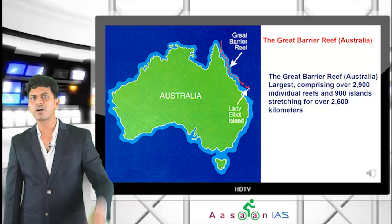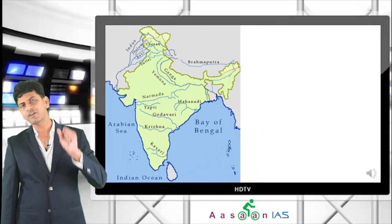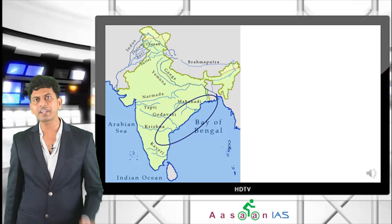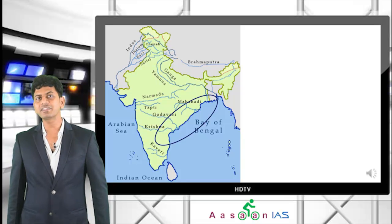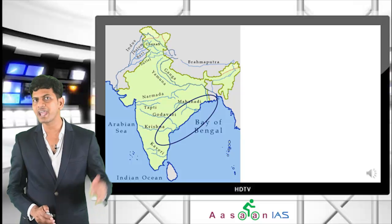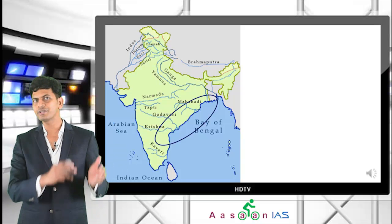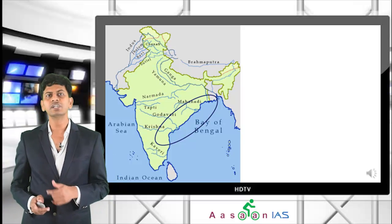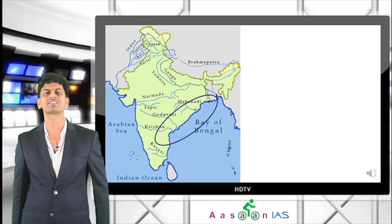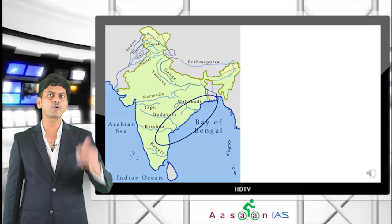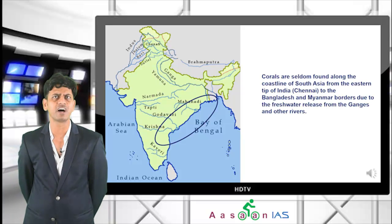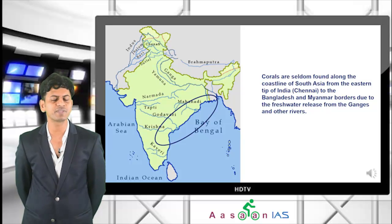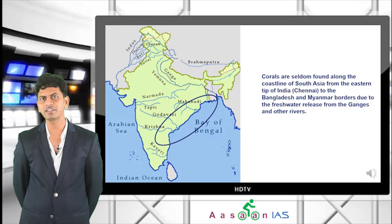On India's eastern coast from Bengal to Chennai, no coral reefs are found. The reason is the large quantity of fresh water carried by the many east-flowing rivers. Corals are seldom found along the coastline from the eastern tip of India — Chennai — to the Bangladesh and Myanmar borders, due to fresh water released from the Ganges and other rivers.